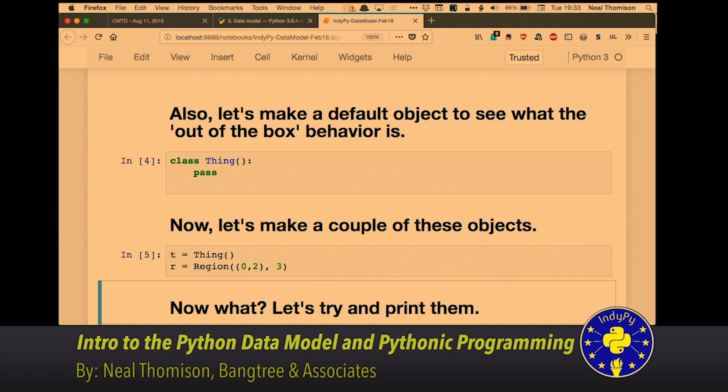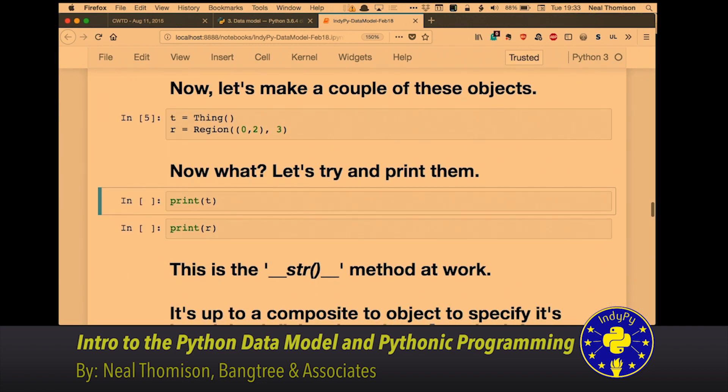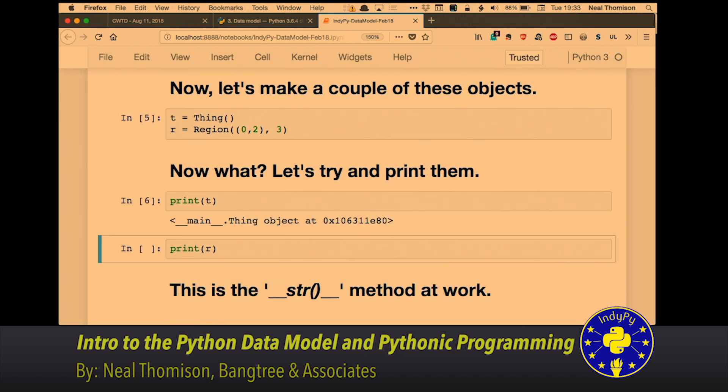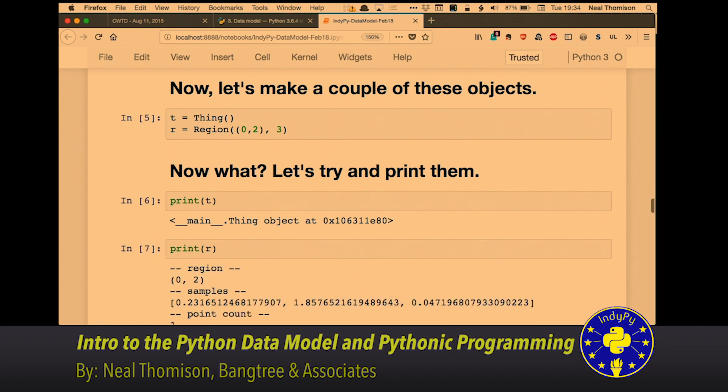So, here I've made two objects, a test thing, and then region. Region's going to be between 0 and 2 with three points, just to make it so we can look at it. So, by default, when you actually say, hey, thing, what are you? This is the default that string gives you back, because print and format look to the thing they're trying to print and go, do you have a string method defined? This is the default. Basically, it gives you its address and virtual memory.